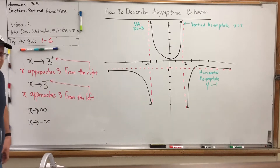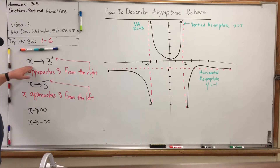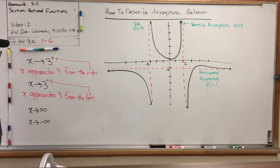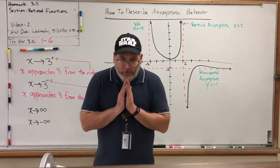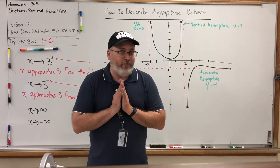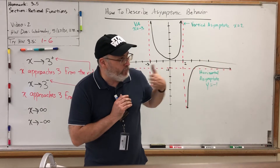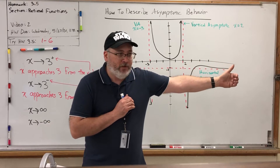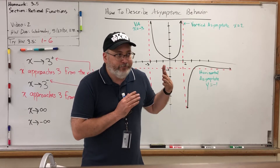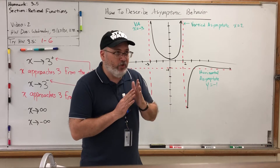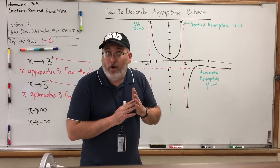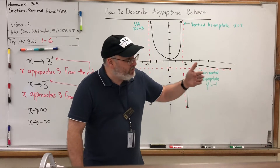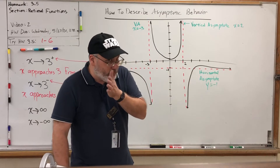When you see something like x pointing to a 3 with a plus where you would expect an exponent, that means x approaches 3 from the right. Think of a number line and the number 3. To approach 3 from the right means you're on the right side of 3 getting closer. For example: give me a number greater than 3 — 4. Now give me a number closer but still greater — 3.1. Give me a number even closer but still greater than 3 — 3.01. Approaching is like having a sequence of numbers progressively closer to a given value.